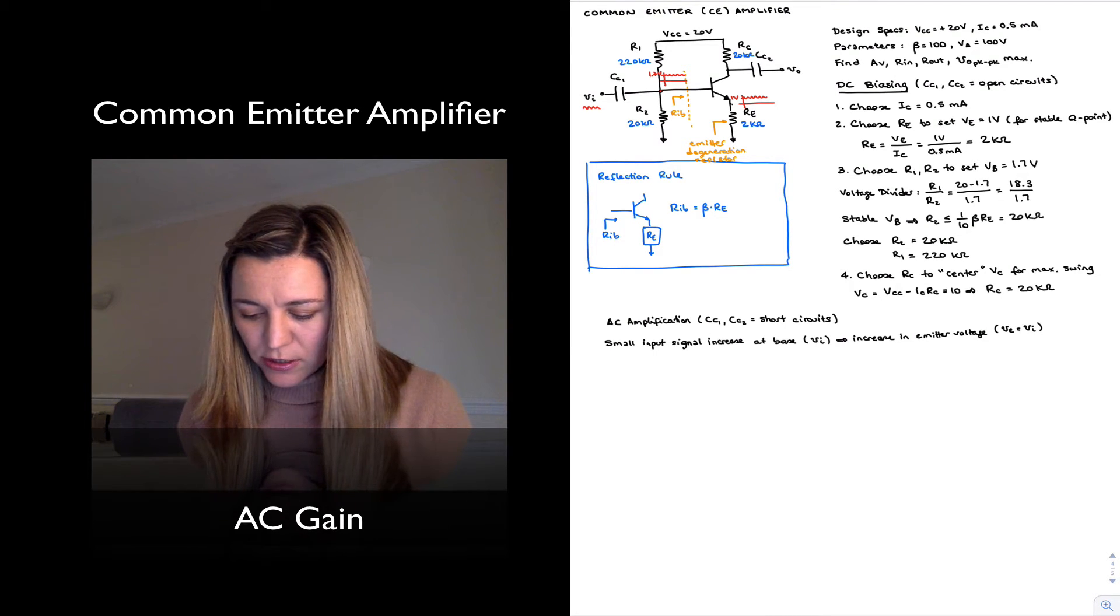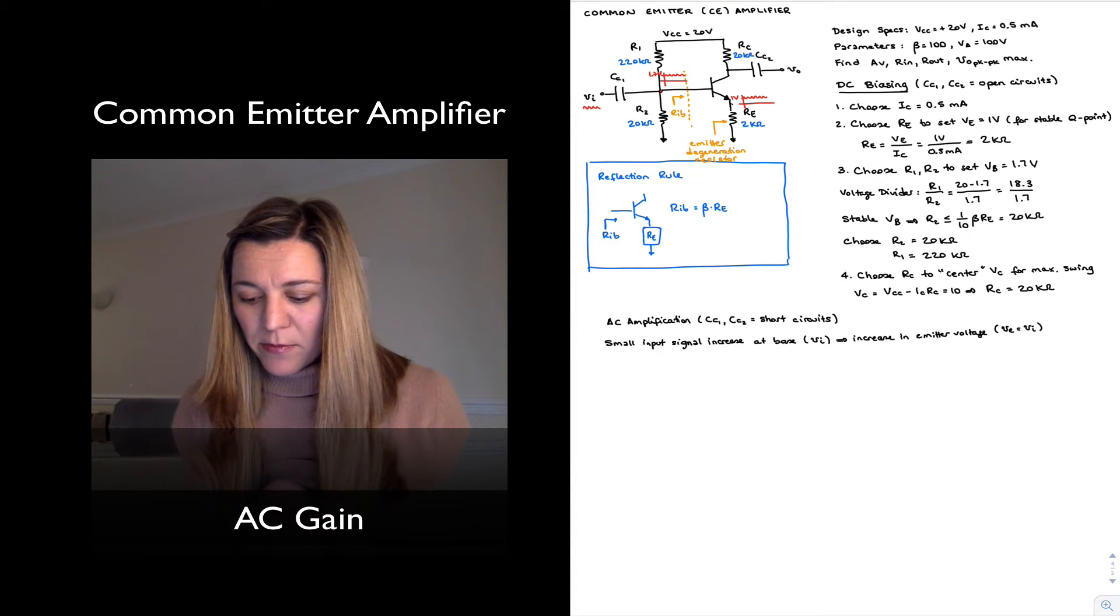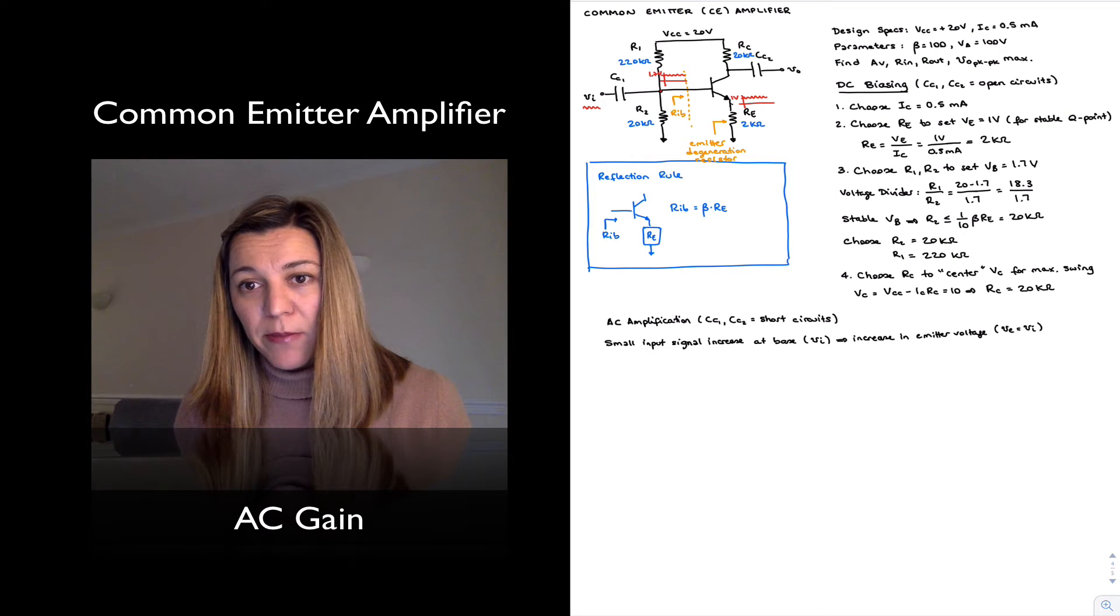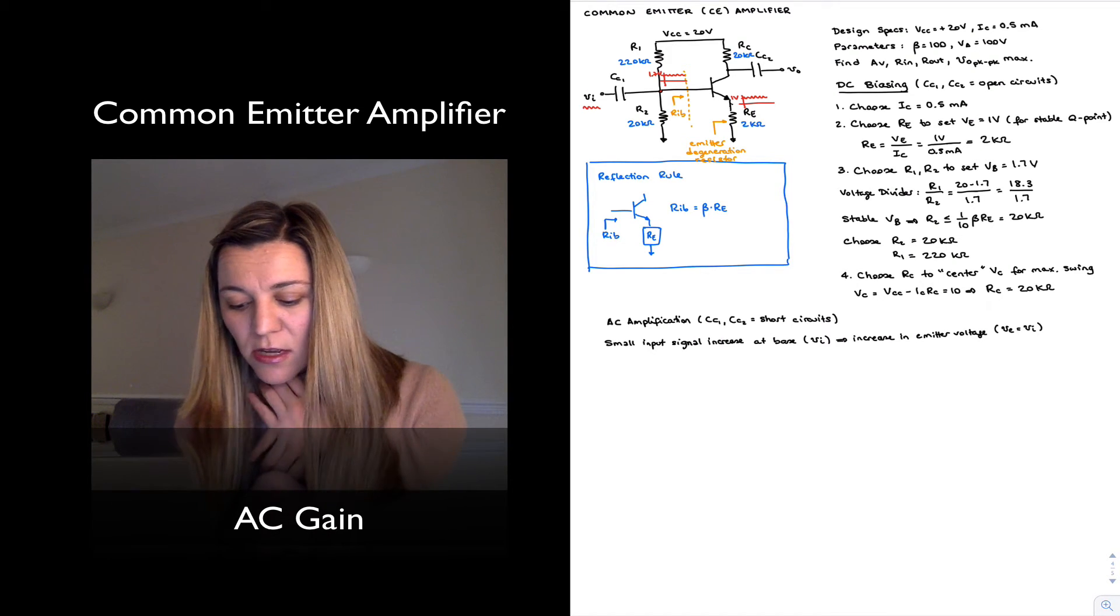Now, if the voltage at the emitter increases by a delta amount, that means that the current through the emitter resistor, the emitter current, increases. Because by Ohm's law, if I have a slightly larger voltage across that emitter resistance, then I'm going to have a slightly larger current through the emitter resistance, which is the emitter current.